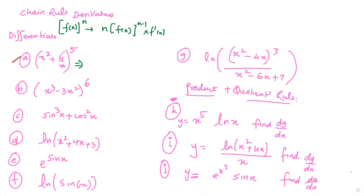When you're doing the derivative of this, you can see that this is the function to the power of 5, so it'll be 5 times (x² + 4/x) to the power 4 in the first step, and then into the derivative of x² + 4/x.